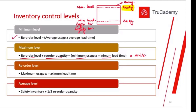The formula to calculate minimum level is: reorder level minus average usage multiplied by average lead time. After that, the average inventory level is simply the level between the maximum and minimum levels — the normal or center level. It can be calculated as: safety inventory plus half of reorder quantity. Whatever buffer inventory we hold, plus half the reorder quantity, gives us the average inventory level.